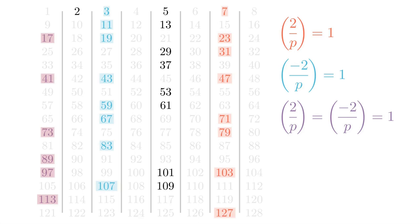And sometimes it happens that (2/p) and (-2/p) are both equal to 1. And in that case, I'm going to color those purple, because red and blue together make purple.